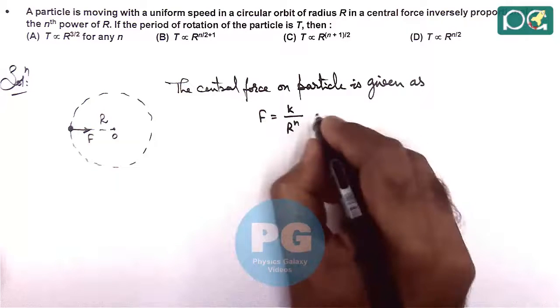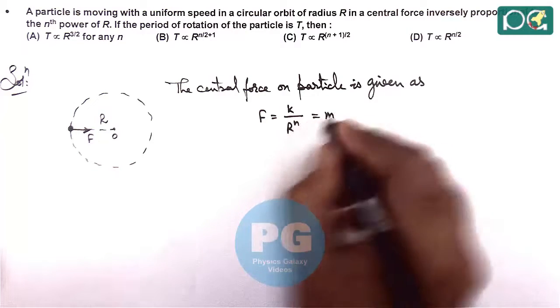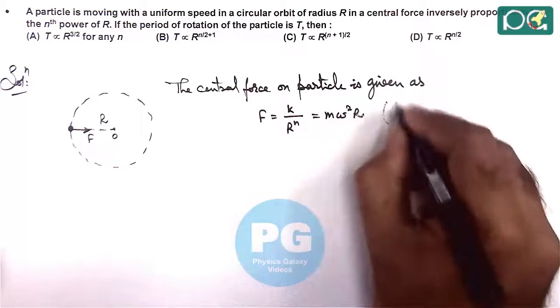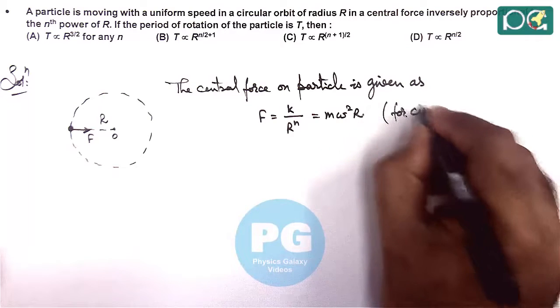And this would be providing the necessary centripetal force, so it can be written as m omega square r for circular motion.